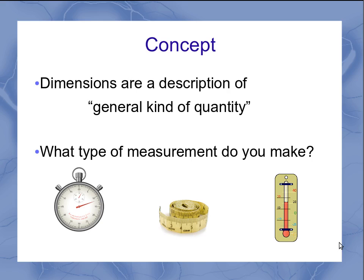We can also think of this in terms of what type of measurement do you make. After all, making a measurement with a clock is a very different type of measurement than you'd make with a ruler or thermometer. These define our types of qualities, or dimensions.